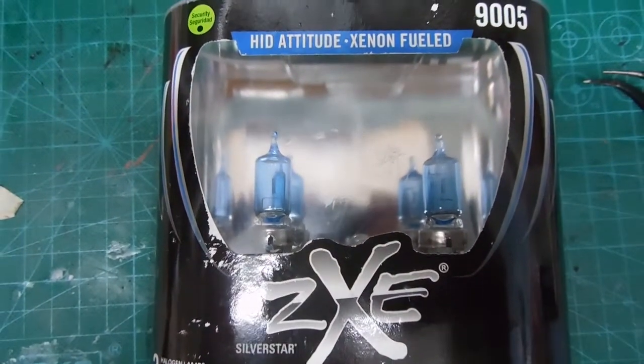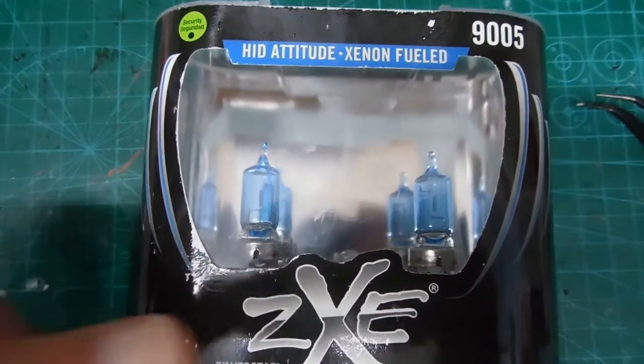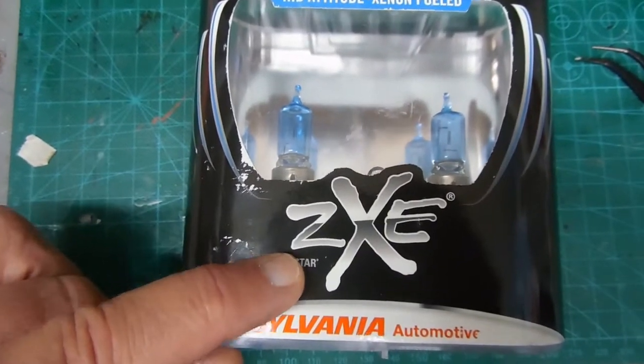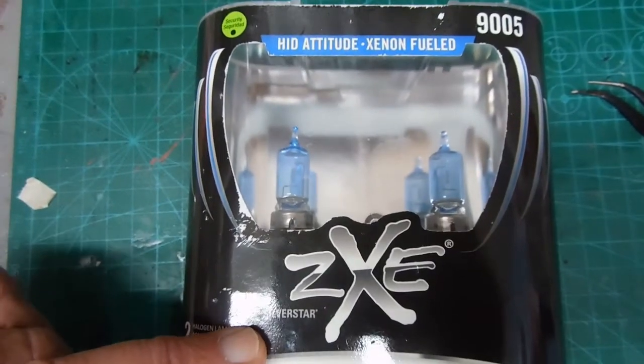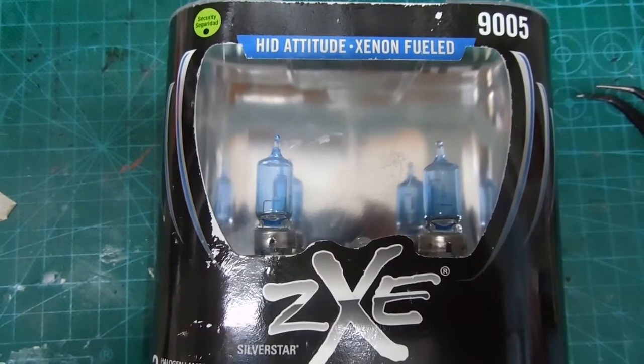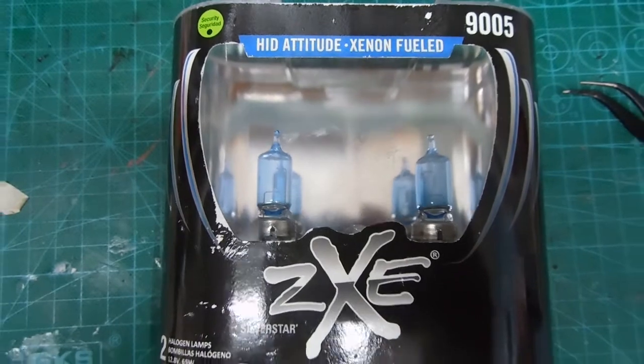This will be a very quick review of the Sylvania ZXE high beam headlight model number 905 installed on a 2016 Subaru Forester.